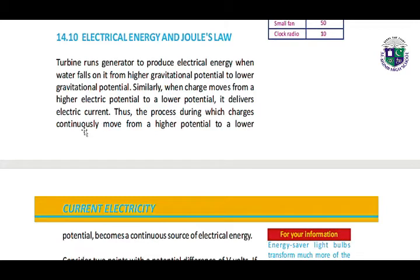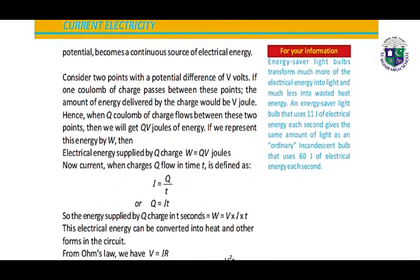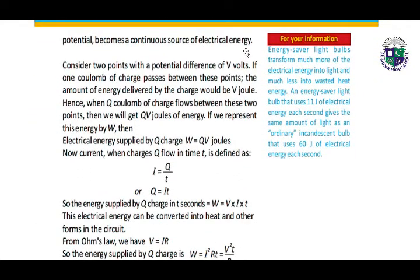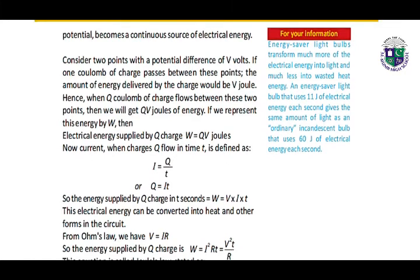The process during which charges continuously move from a higher potential to a lower potential becomes a continuous source of electrical energy. Consider two points with a potential difference of V volts. If one coulomb of charge passes between these points, the amount of energy delivered would be V joules. When Q coulombs of charge flow between these two points, they will deliver QV joules of energy. If we represent this energy by W, then W equals QV joules. When charges Q flow in time T: I equals Q over T, so Q equals IT.